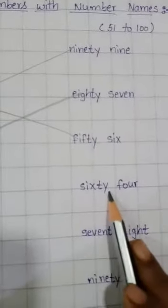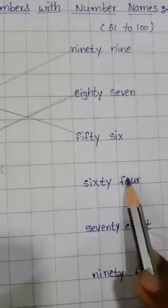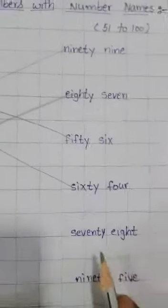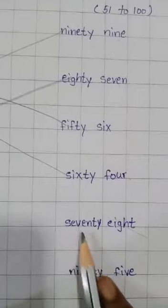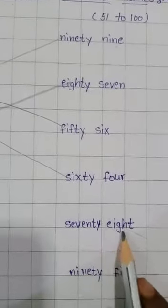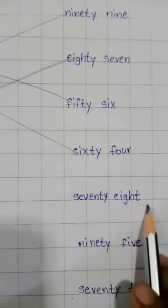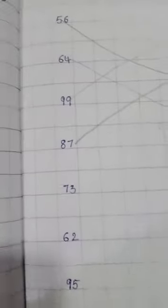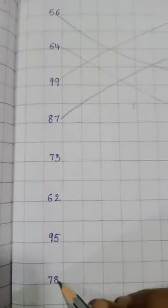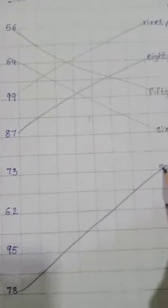Next, S-I-X-T-Y sixty, F-O-U-R four, 64. Yaha, 64. Next, S-E-V-E-N-T-Y seventy, E-I-G-H-T eight, 78. 78 number. Yes, need check. So we have to match the 78 number.